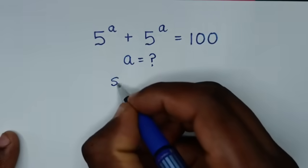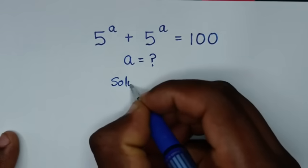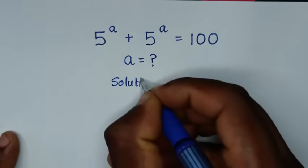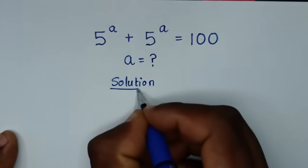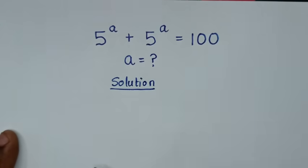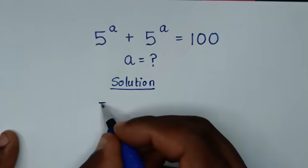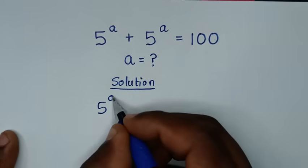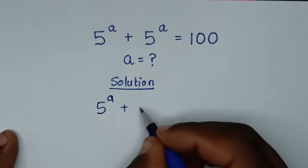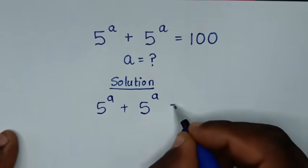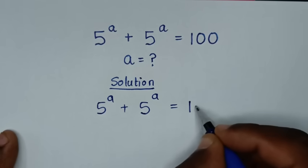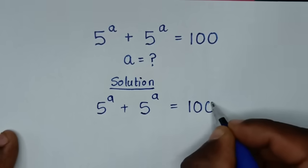Now, solution. From our problem, which is 5 power a plus 5 power a is equal to 100.